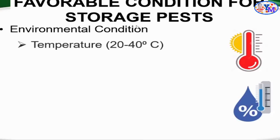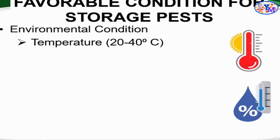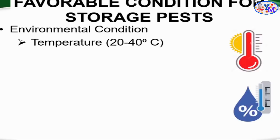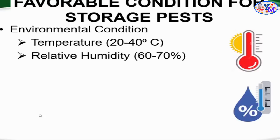The favorable conditions for storage pests to thrive include: first, temperature — within 20 to 40 degrees Celsius is a favorable condition for them to multiply and proliferate. Next is relative humidity — if the storage facility reaches 60 to 70% relative humidity, that creates favorable conditions for their reproduction.